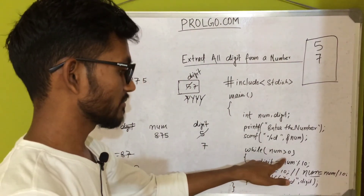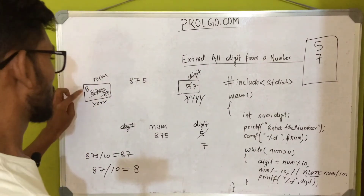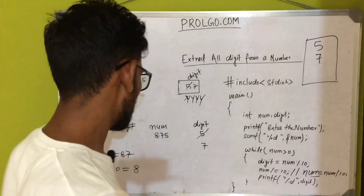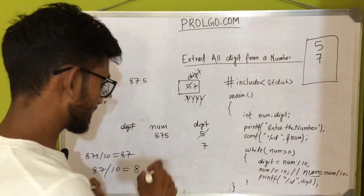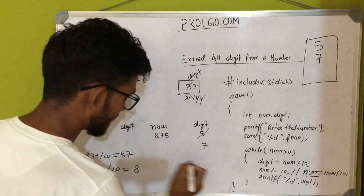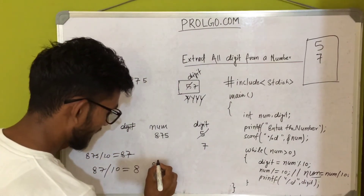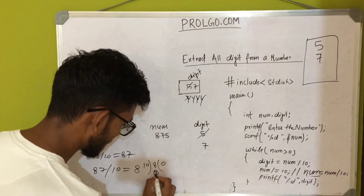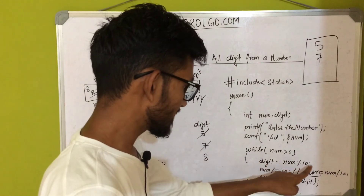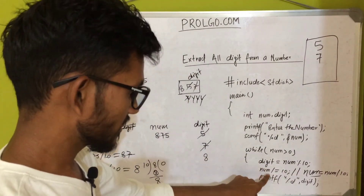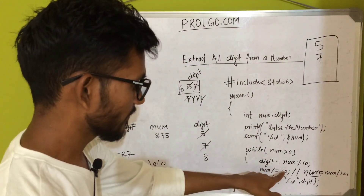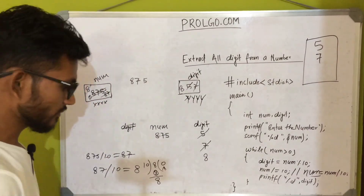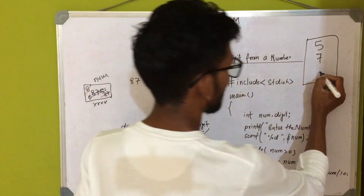Control returns to the while condition: is num greater than 0? num is 8 — yes. So digit = 8 % 10 = 8. Then num = 8 / 10: since 8 is smaller than 10, we get 0. Num is updated to 0. We print digit, which outputs 8.